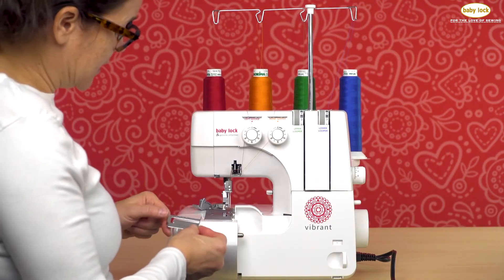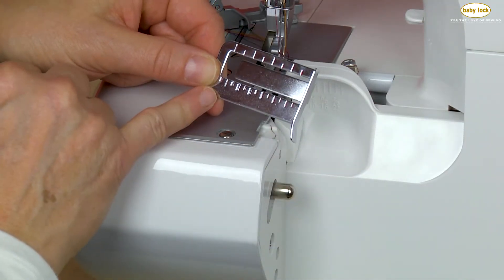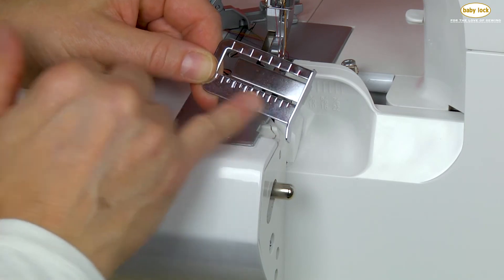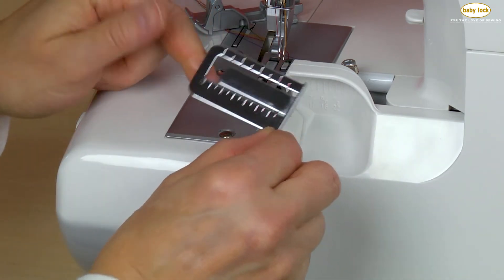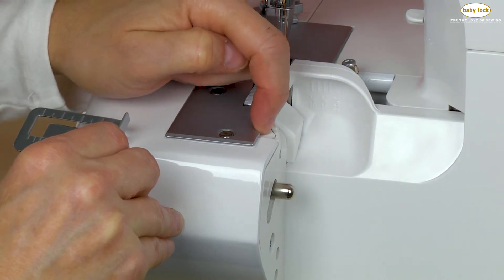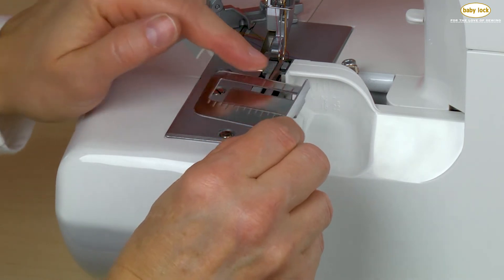Now there's another great attachment that comes with the Baby Lock Vibrant, and this is called a cutting width stitch gauge or cutting width gauge. You'll notice on the front of the needle plate there's a little indent with a slot, and you'll see there's a tab on this gauge.